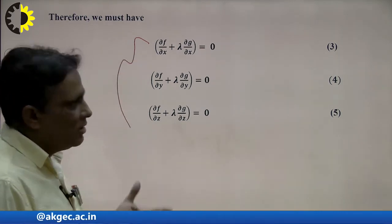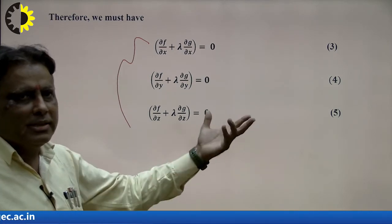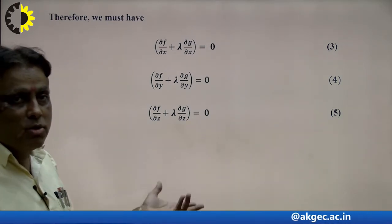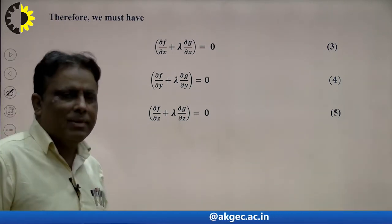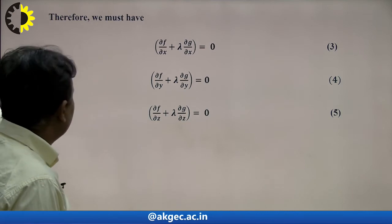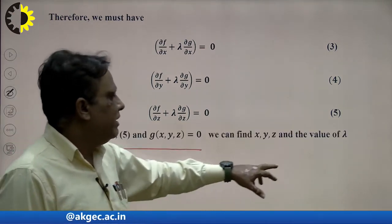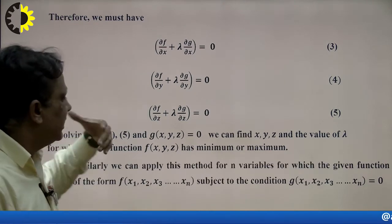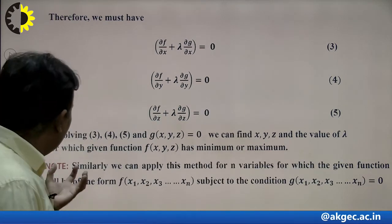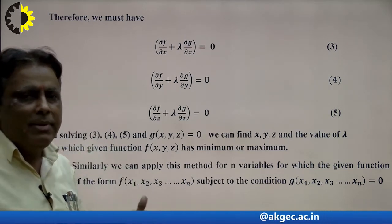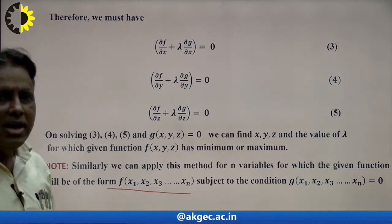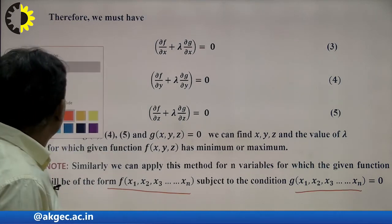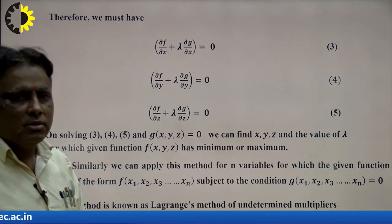Suppose we have one function and two conditions — how to apply this method? If we have two conditions, we use two multipliers λ and μ. If we have one condition, we use one multiplier λ. If we have three conditions, we use three multipliers. The beauty of the Lagrange method is that it can be applied for n variables with any number of conditions.